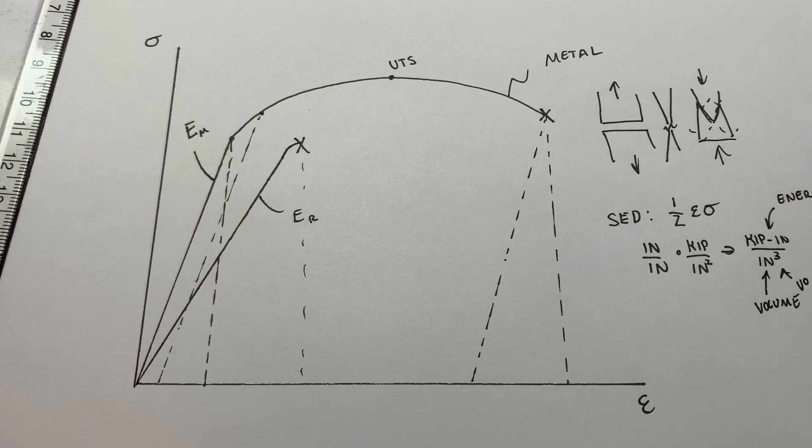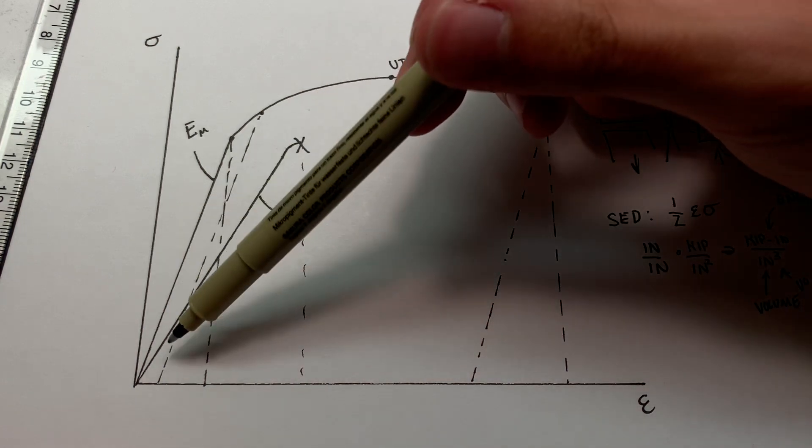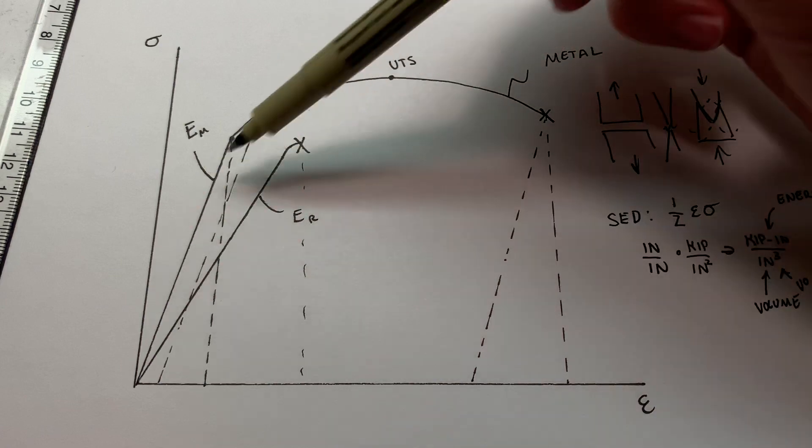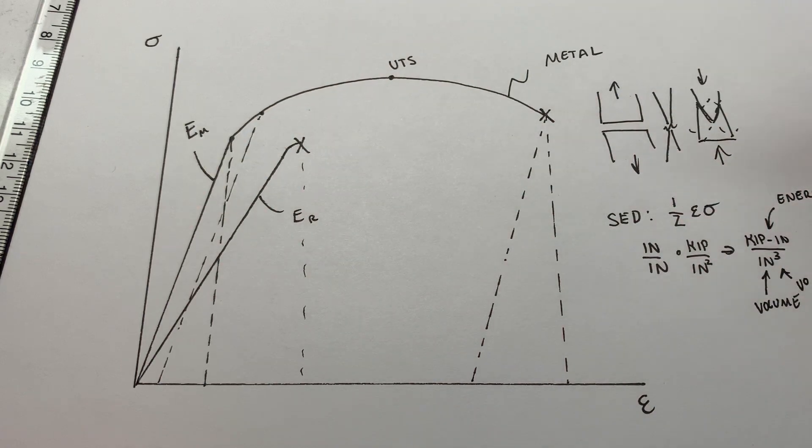So it is indeed an energy density. And then of course, this area under the curve here, way smaller than this one. So that rock's going to absorb much less energy before it breaks. It's got a much lower toughness than the metal. Which once again, that goes back to it being not an ideal engineering material, but it's what you have to work with.